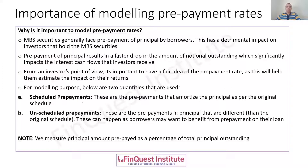For modeling purposes, there are two quantities generally used: scheduled prepayment and unscheduled prepayment. A scheduled prepayment amortizes the principal as per the original schedule — it is a known quantity. An unscheduled prepayment has a higher impact compared to a scenario with no prepayments; this is where borrowers want to benefit by prepaying their loans, perhaps through turnover or refinancing. For the examination, remember that we measure the principal amount prepaid as a percentage of total principal outstanding.